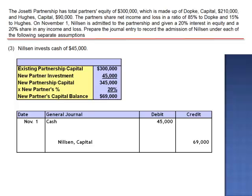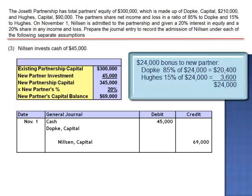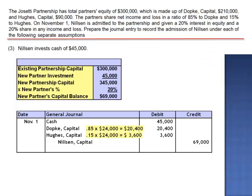This is referred to as a bonus to the new partner. We take the $24,000 bonus and allocate it using the old profit-loss ratio: 85% of $24,000 is debited to Dopke's capital account, and 15% of $24,000 is debited to Hughes. Dopke and Hughes are walking away from $24,000 of their claim against the partnership in favor of Nilsen, so they must have been pretty eager to have Nilsen as a partner.